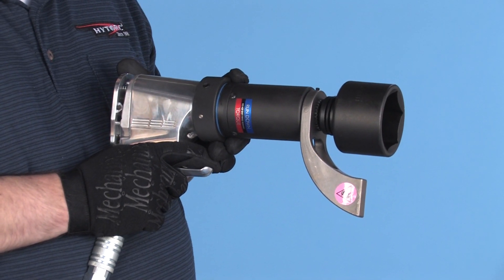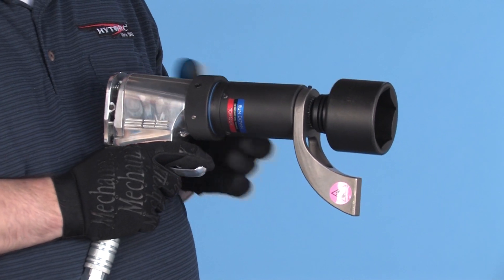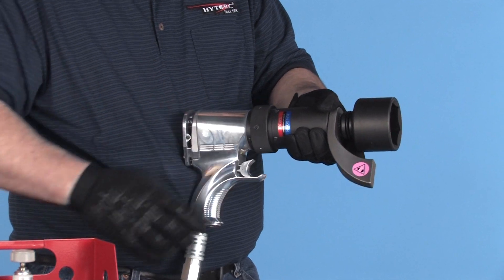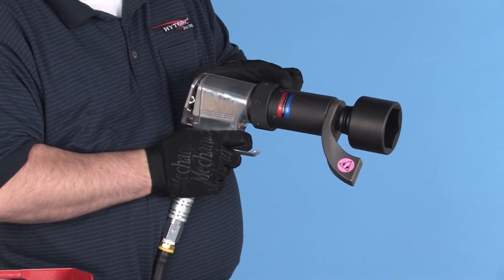while torque is limited so that the tool cannot spin or kick back in the operator's hands. In the power, or torquing position, the tool will rotate with regulated force.